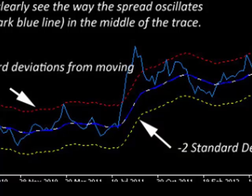We can see the spread is the light blue line here, and this is really the relationship between the two instruments which you are trying to ARB. In this case we are looking at the S&P 500 index and the GER30 index, which is the DAX German index. We can see the way the light blue line, the spread, oscillates around its own mean. The mean is the dark blue line running through the middle of the spread.